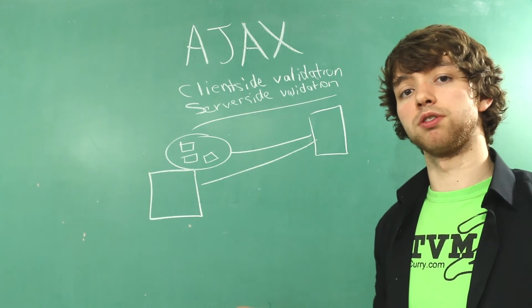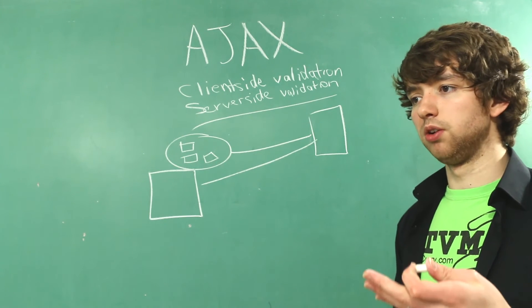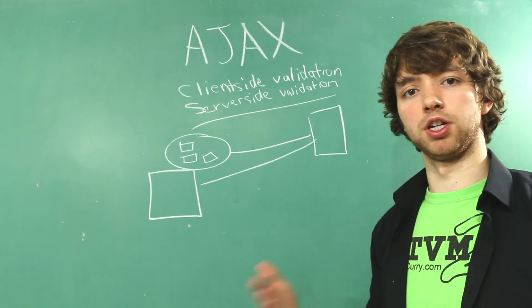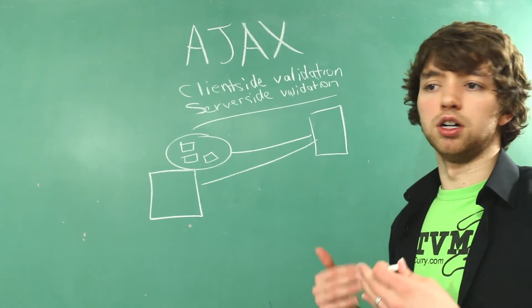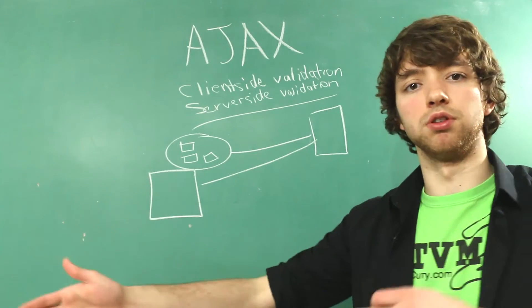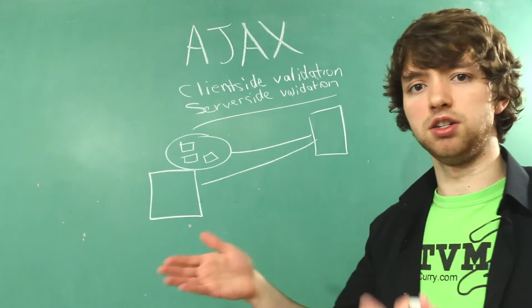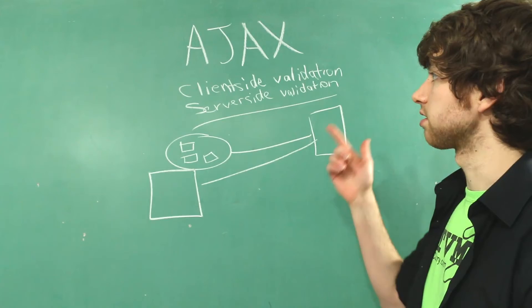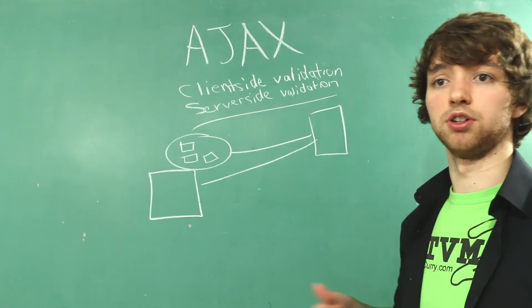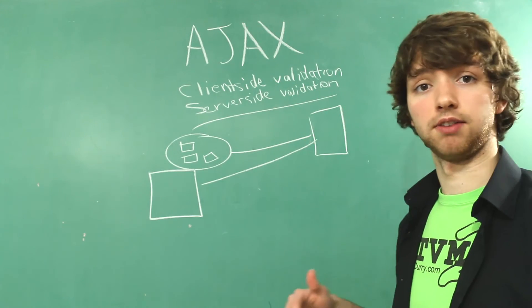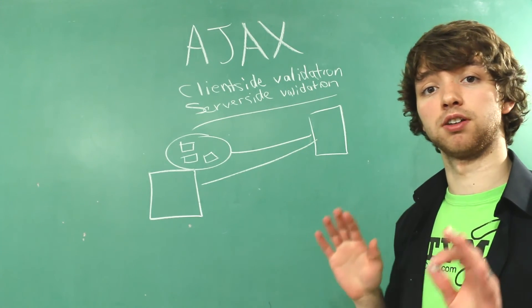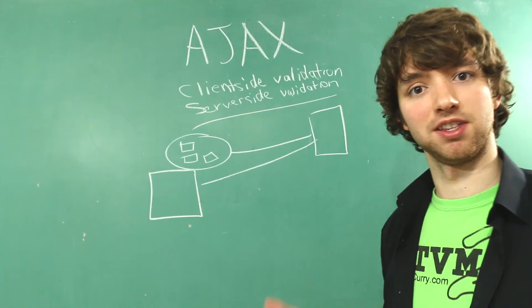And this also allows you to do more things. For example, if you want to check if a username is already created, you can't do that with client-side validation unless you send a list of every single username that's ever been created. And you don't want to do that. With AJAX, the server-side validation could check that and send that data back, and it would look just like client-side validation. That's the magic of AJAX. Hopefully you guys see the power in that.